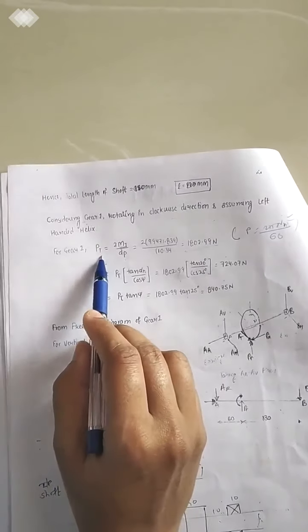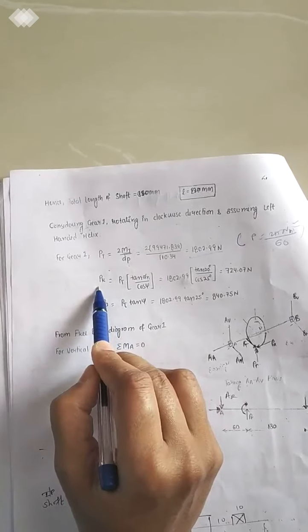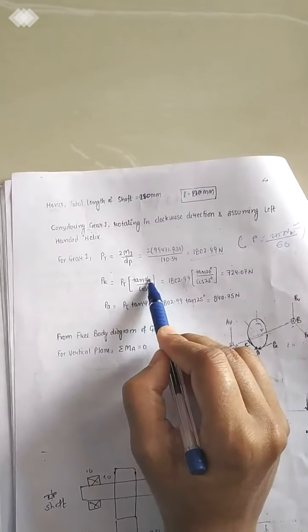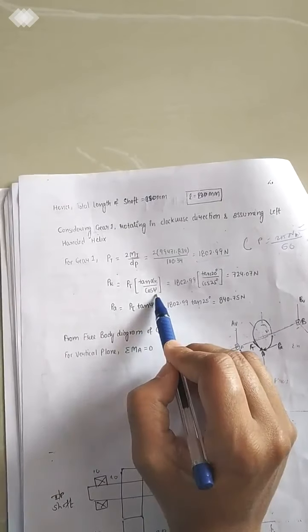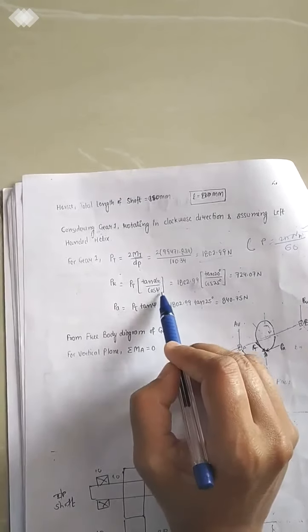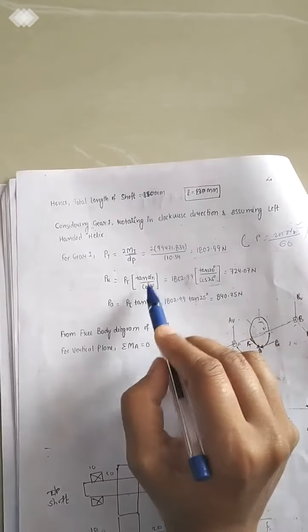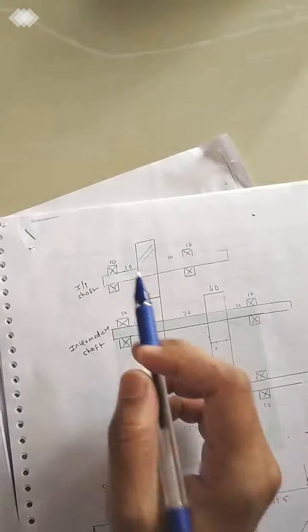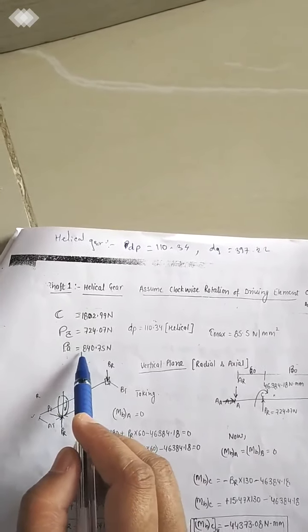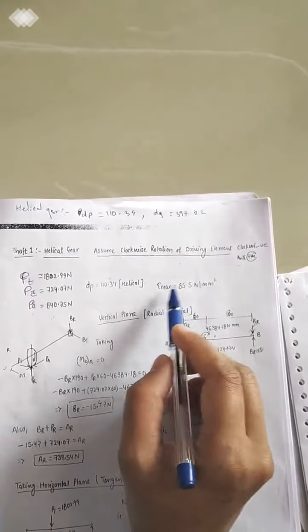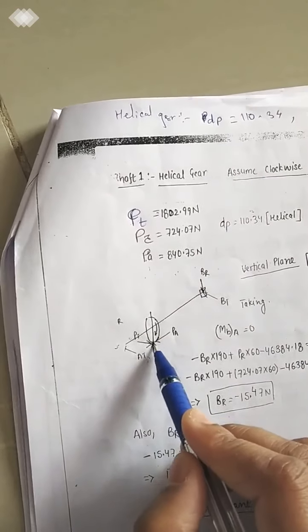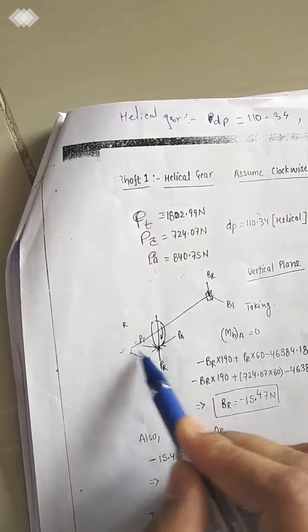Using the tangential force, we calculate the radial force Pr and axial force Pa for the helical gear using the standard formulas, where φn is the pressure angle (20°) and ψ is the helix angle (25°). Substituting these values gives us Pr and Pa. For shaft one with the helical gear, we now have all forces: Pt, Pa, and Pr.